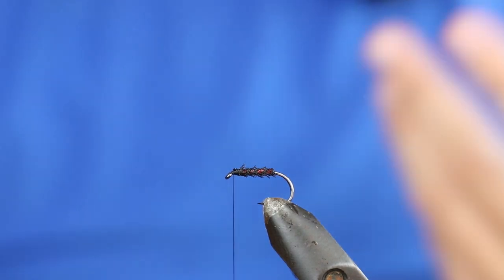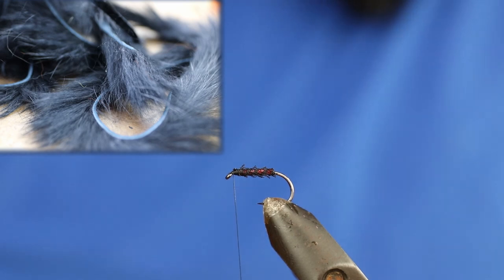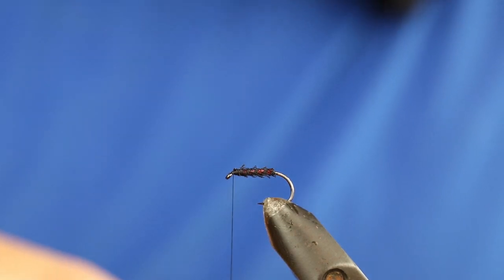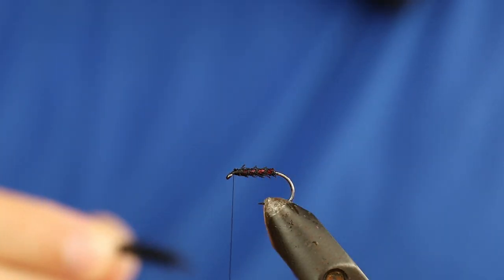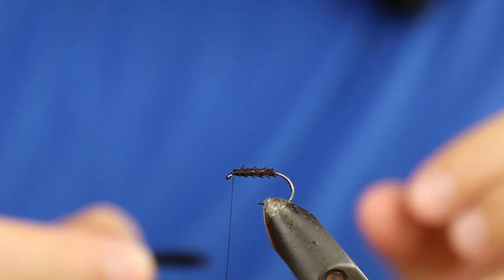And then the wing. You could use marabou or rabbit. Most of the time when I'm fishing cormorants, I tend to fish them really slowly, almost like nymphs, so rabbit is my preferred choice. I prefer to take out the finer, sharper points of the rabbit so I'm left with the softer, more subtle part of the wing.